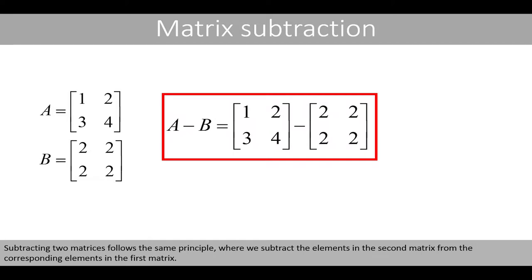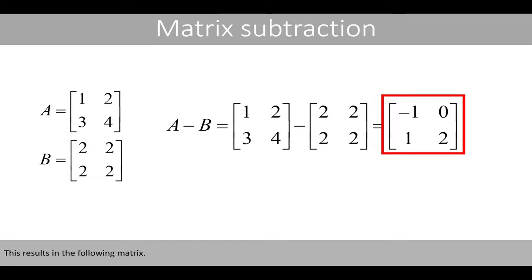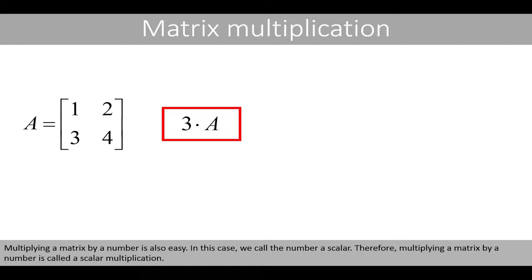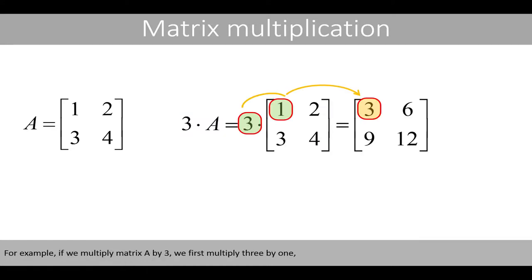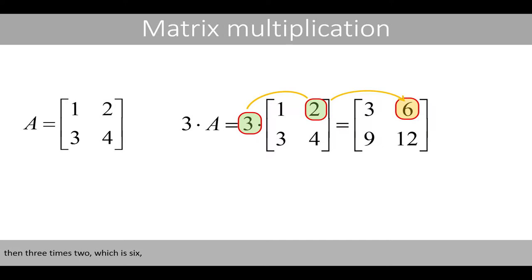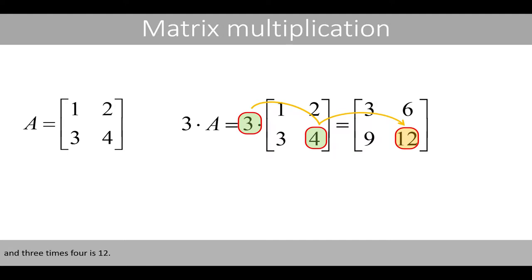Subtracting two matrices follows the same principle, where we subtract the elements in the second matrix from the corresponding elements in the first matrix. Multiplying a matrix by a number is also easy — we call the number a scalar, so this is called a scalar multiplication. For example, if we multiply matrix A by 3, we multiply 3 by each element: 3 times 1, 3 times 2 is 6, 3 times 3 is 9, and 3 times 4 is 12.